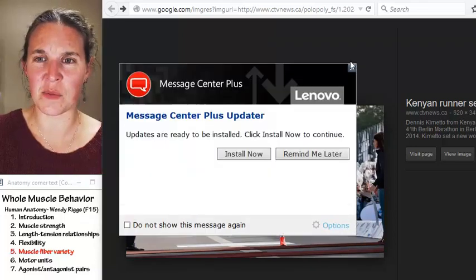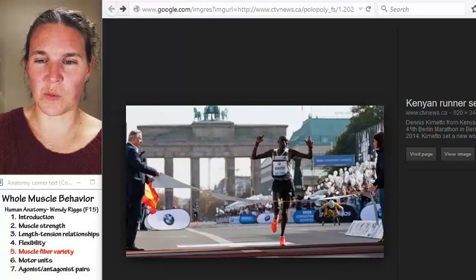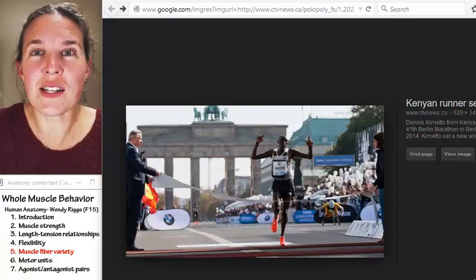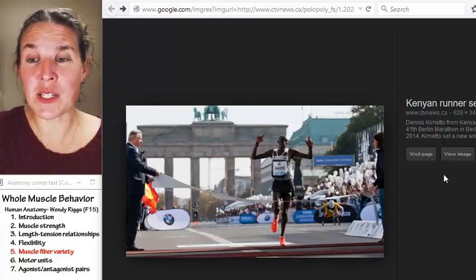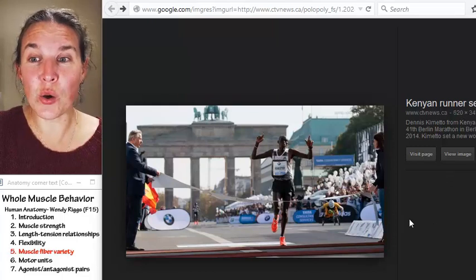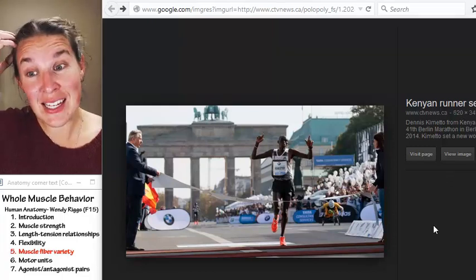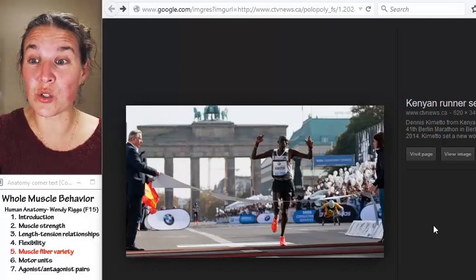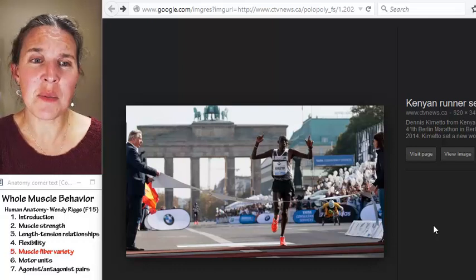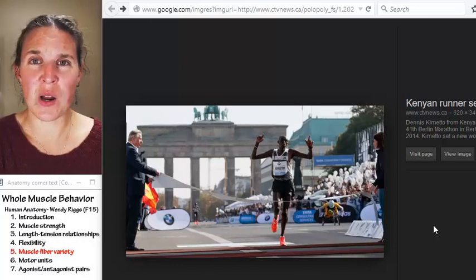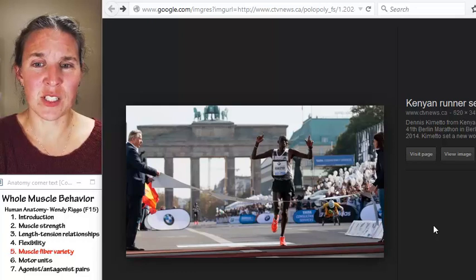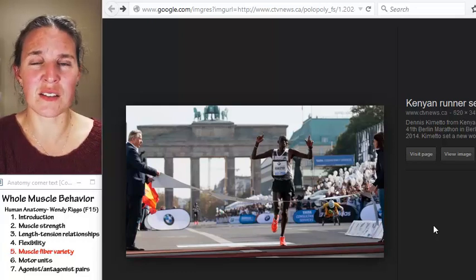Get out of there. Goodbye. What was that? What was that and why did it show up? Didn't want me talking about old boy Dennis Kometo who is the Kenyan marathon world record holder. And he ran the marathon in like two hours and two minutes or something like shocking.